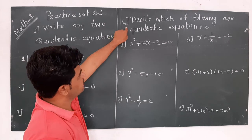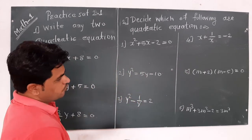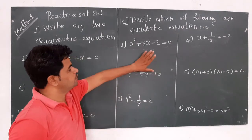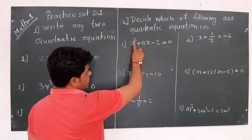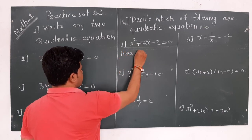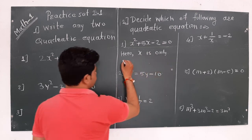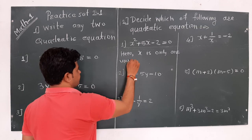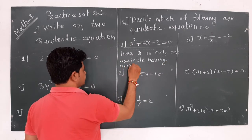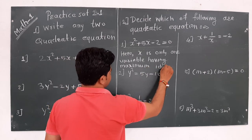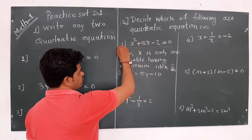Now, next — second problem: decide which of the following are quadratic equations. We have been given 6 equations here, but we don't know whether they are quadratic equations or not. For the first equation, x is the only variable having maximum index 2. Therefore, it is a quadratic equation.